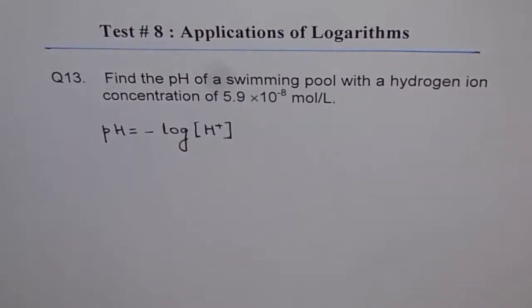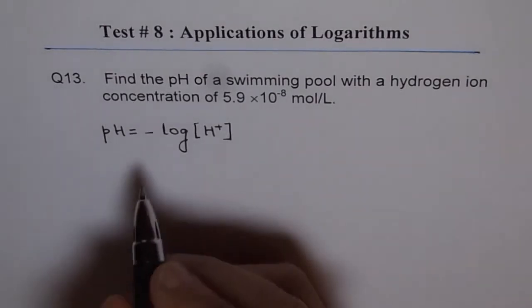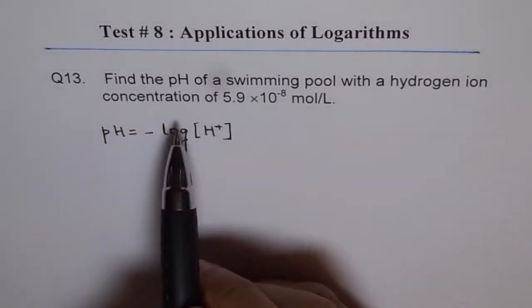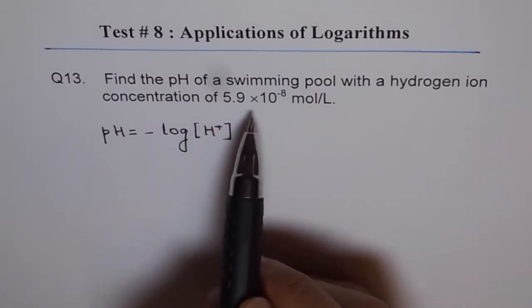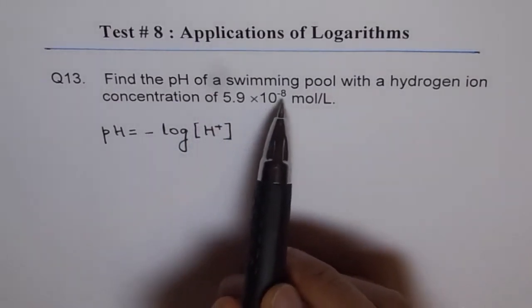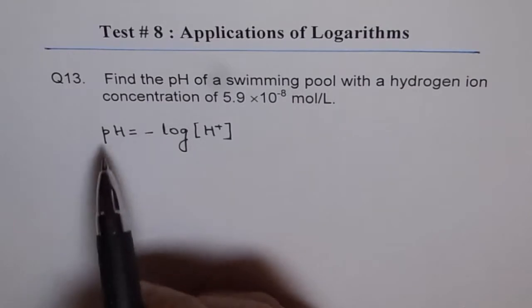Chemists measure pH in terms of hydrogen ion and that is the formula. So here we are given that the concentration is 5.9 into 10 to the power of minus 8 and we need to find pH.